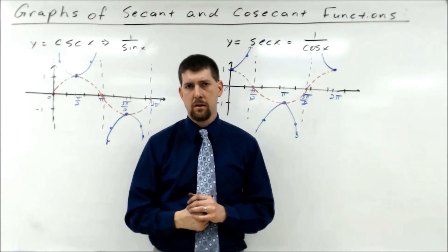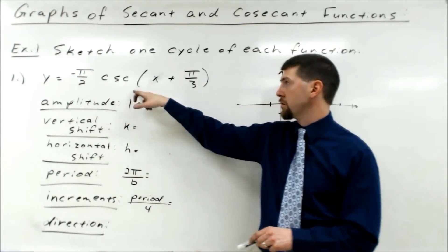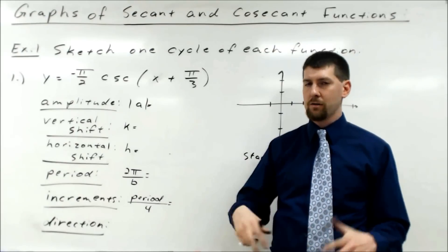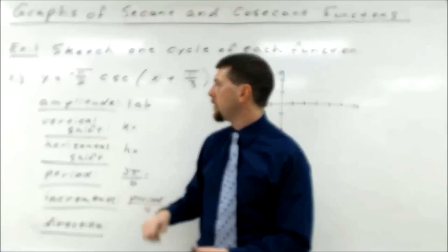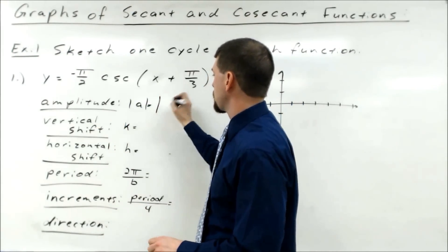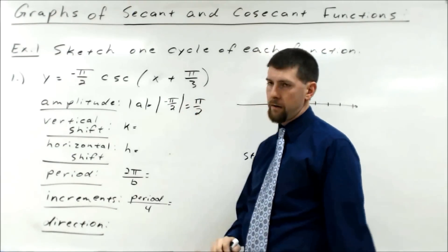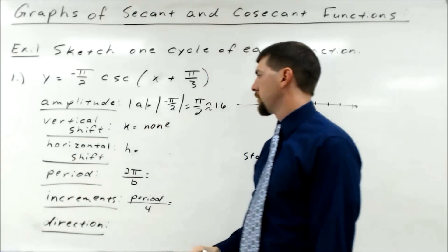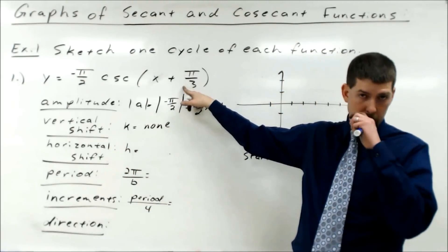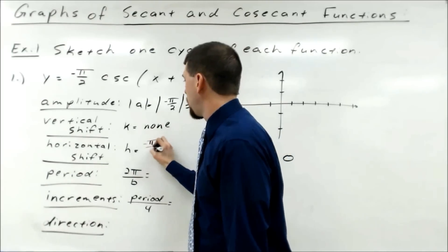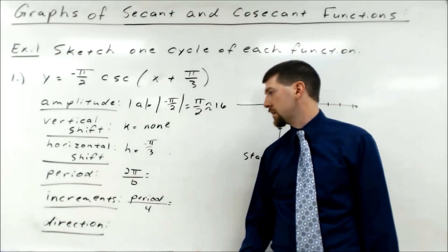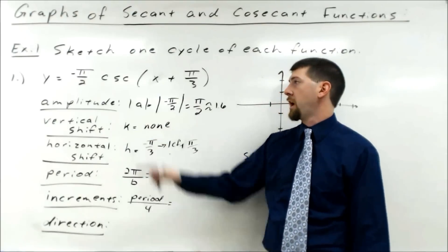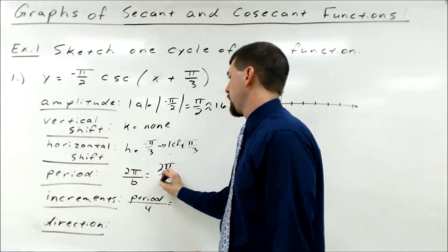Let's graph y = -π/2 · csc(x + π/3). Amplitude is |a| = |-π/2| = π/2, which is approximately 1.6. Vertical shift: nothing added on the end, so none. Horizontal shift: h = -π/3, and we take the opposite of what's written, so this corresponds to left π/3 units. Period is 2π/b, where b = 1, so period = 2π. Increments are period over four: 2π/4 = π/2.